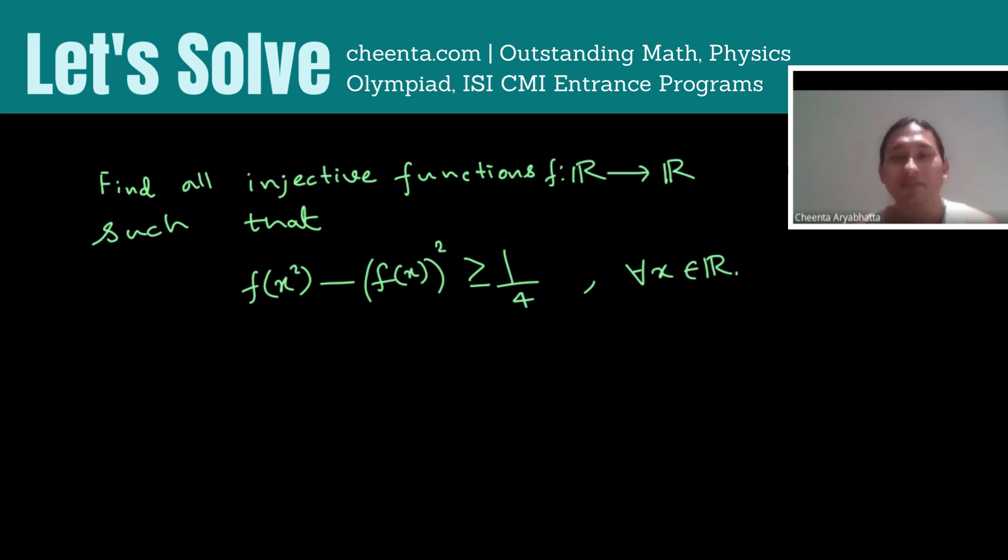Hi, today we have a problem which could be considered useful for basic olympiads, and ISI CMI as well. The problem says: find all injective functions from R to R such that f(x²) - (f(x))² is always greater than or equal to 1/4.